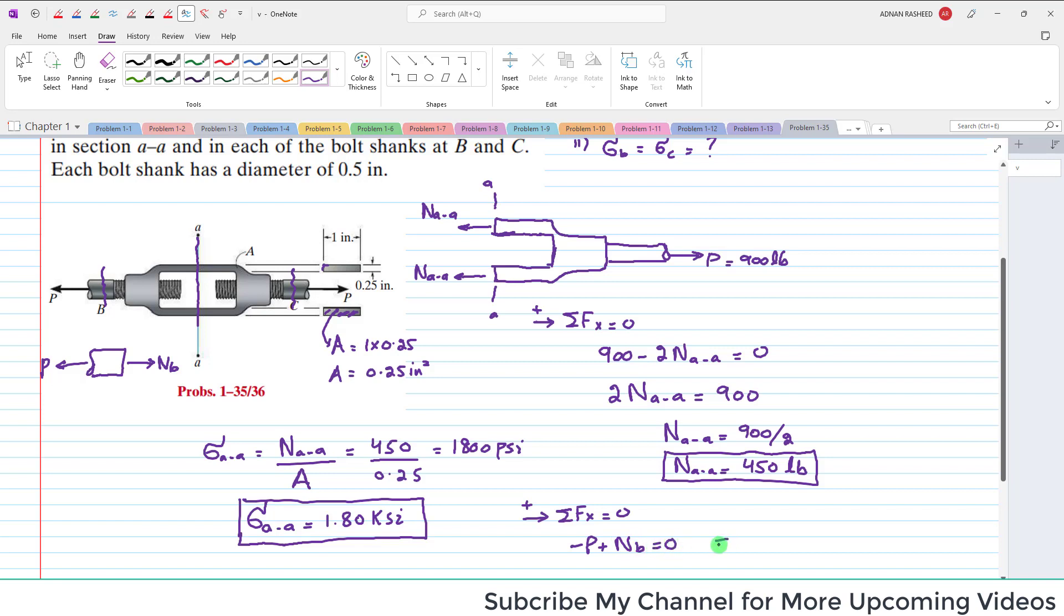It is clear that minus P plus N_B is equal to zero. So it means that N_B is equal to P, which is equal to 900 pounds.